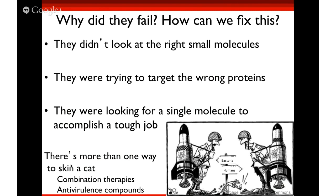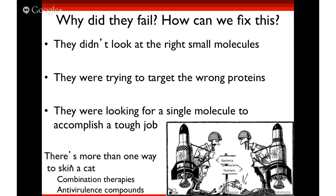So if it's so easy to kill bacteria using these experiments, how come we don't have more antibiotics? A case study from 2009 written by a head scientist from a prominent pharmaceutical company analyzed 530,000 different small molecules looking for which ones could be antibiotics. 67 of their experiments used the target-based approach with purified proteins, and three used whole bacterial cells. They found only five worked — a success rate of 0.0009%. That cost them over $70 million and took over six years. And they weren't the only company — there were tens of others doing the same exact search.